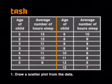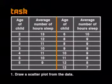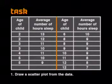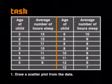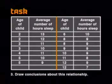Research was done on a group of 15 children under the age of 12 to see if there is a relationship between the average number of hours they sleep per night and their age. Draw a scatter plot from the data and explain why this is a negative correlation. Then draw conclusions about this relationship. Join us next time when we will bring you more data handling.